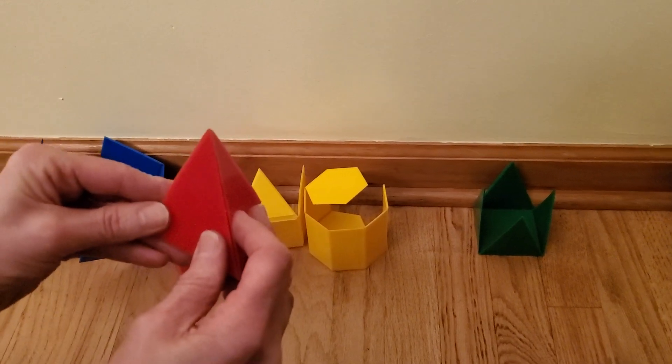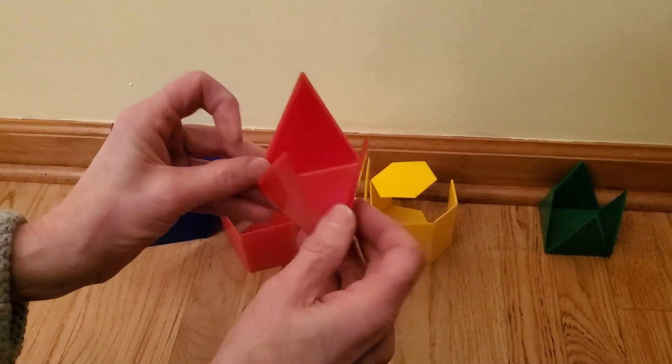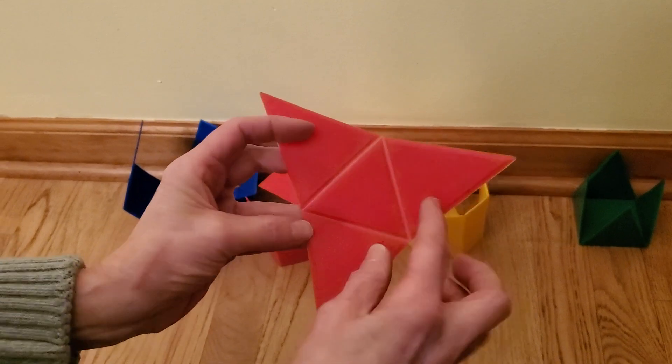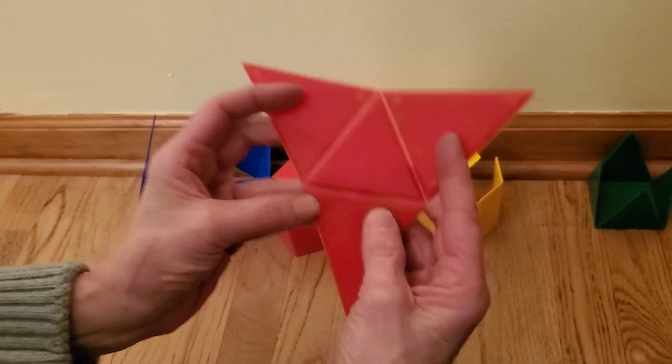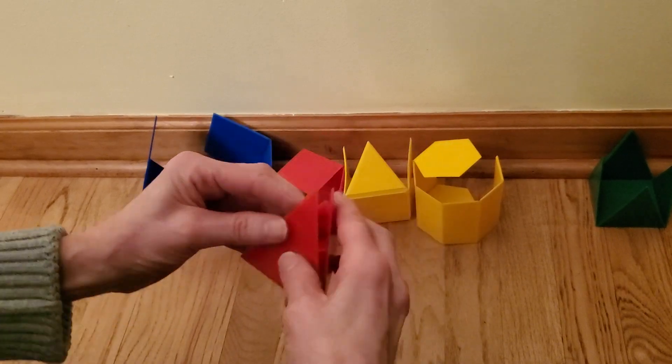This pyramid is a triangular pyramid because it's completely made up of triangles. There are one, two, three, four triangles or four faces in the net form of this triangular pyramid.